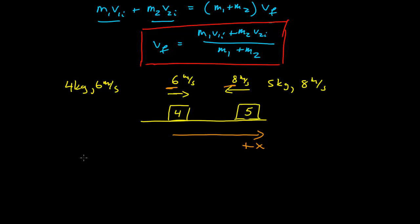So now after that, I can go to essentially my relationship for my final velocity. It's equal to the mass of one, which is four, velocity initial of one, which is six,